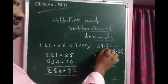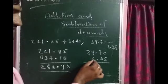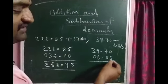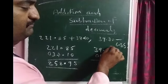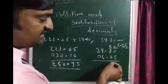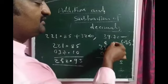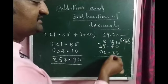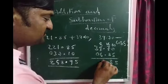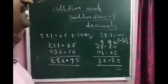Now subtraction: 39.70 minus 6.85. Note the second number has no digit in the hundredths place, so keep 0 there. Starting from the right: 0 minus 5 is not possible, so borrow — making it 10 minus 5 equals 5. Next, 6 minus 8 is not possible, borrow again from the tenths place making it 16 minus 8 equals 8. Keep the decimal point. 8 minus 6 is 2. 3 minus 0 is 3. The answer is 32.85.